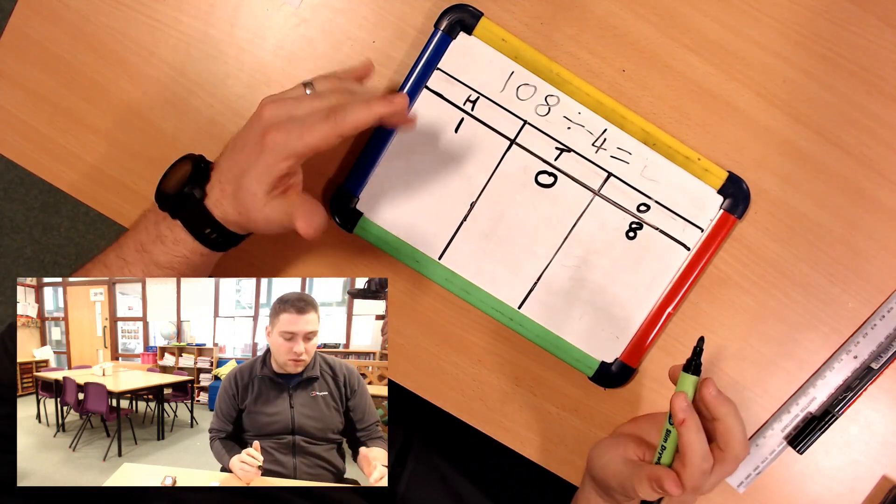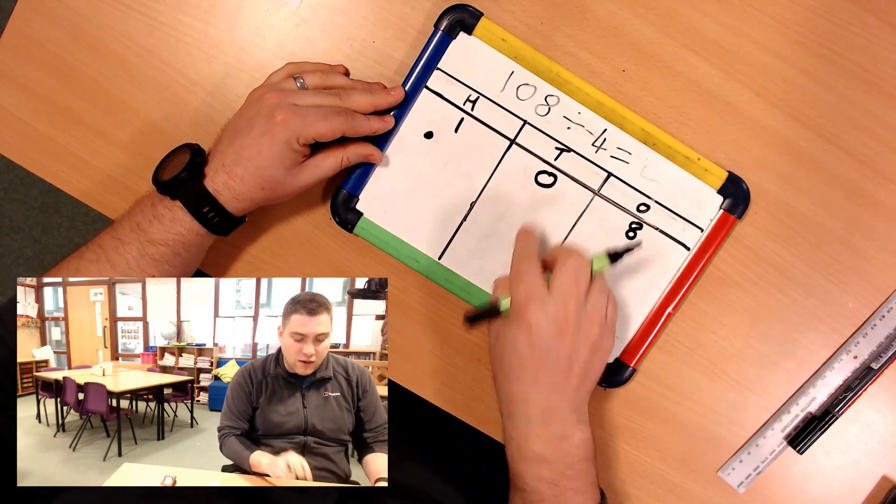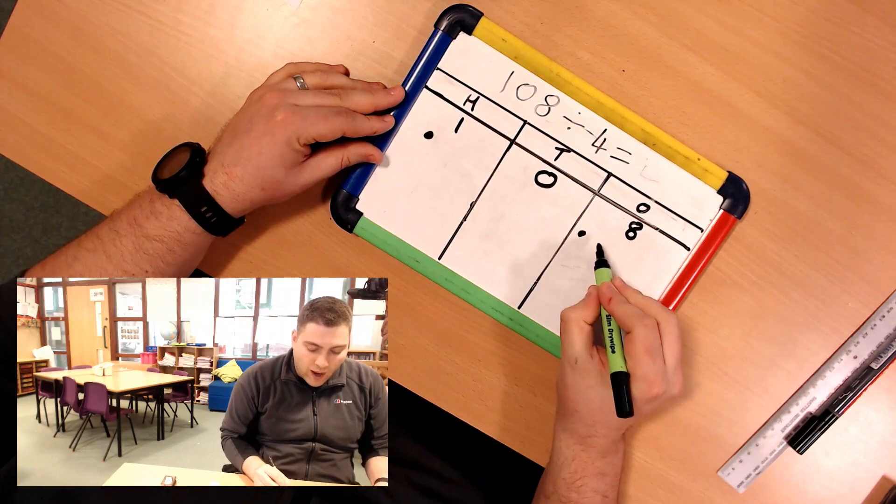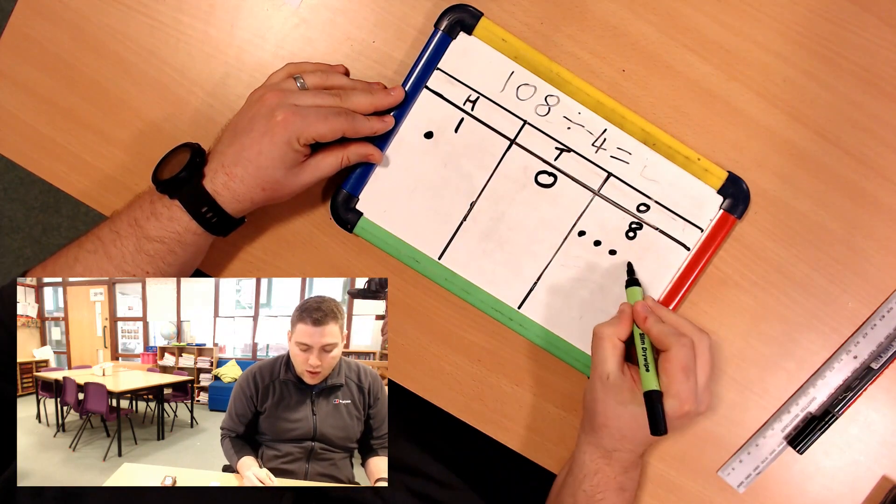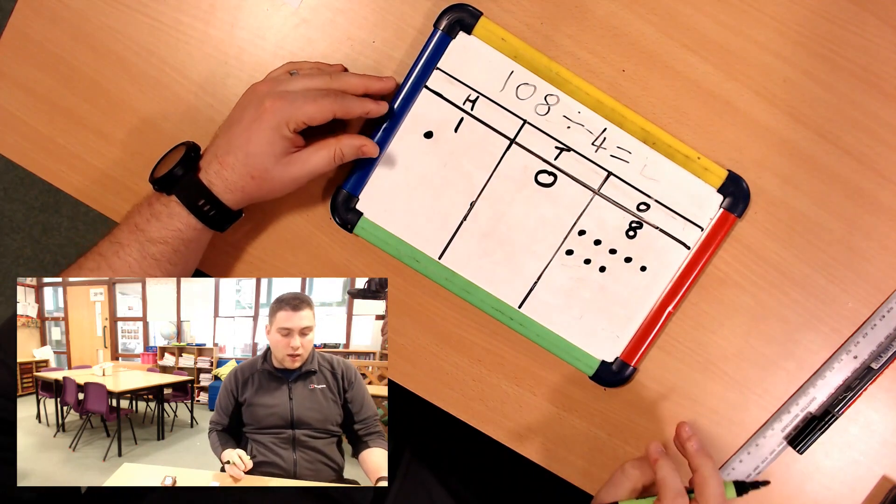Okay, and then I'm going to use my pictorial representation of my dots again. So I've got 100. Nothing there because it's 0. And then I've got my 8 1s. 3, 4, 5, 6, 7, and 8. Okay.